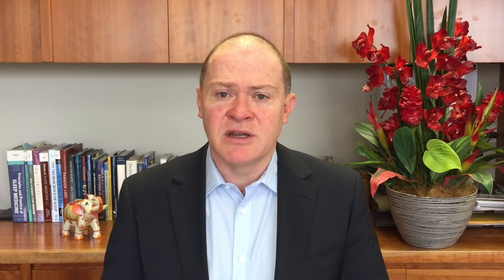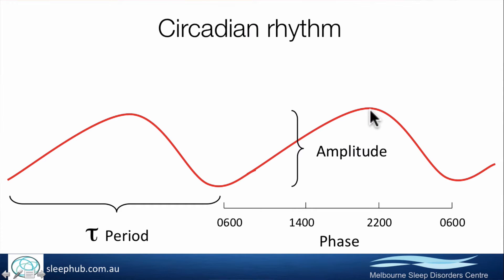The circadian system has a number of properties. One key property is the length of the circadian period — per 24 hours, what is someone's intrinsic body clock? Some people have an intrinsic body clock of exactly 24 hours. That person will find they're waking pretty much the same time every day, feeling sleepy about the same time every day, not drifting later on weekends or holidays. However, that's not the average for people.